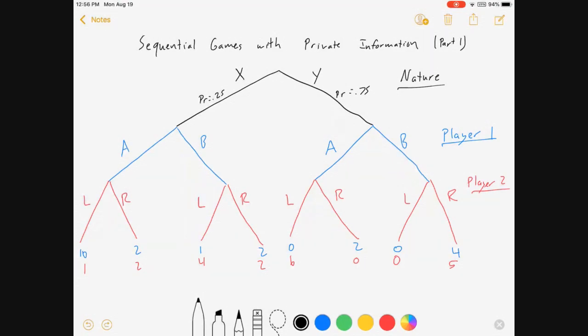Player one is our first actual person in the game, and player one will then choose A or B, and player two will respond by playing L or R. Now if this were a sequential game with perfect information, they would first observe nature's choice and then choose their subgame perfect Nash equilibrium.